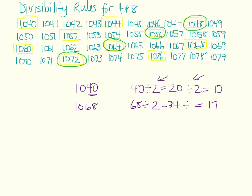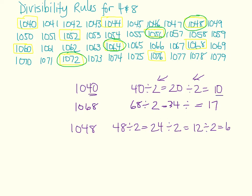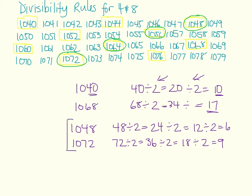If we're looking at numbers divisible by 8, let's take the last two digits of 1,048 — that's 48. Divide by 2 to get 24, divide by 2 again to get 12, and divide by 2 a third time to get 6. We can continue on, but that's not true for all of them. Looking at 1,072, we take 72 and divide by 2 to get 36, then 18, then 9. Numbers divisible by 8 can be divided by 2 three times.